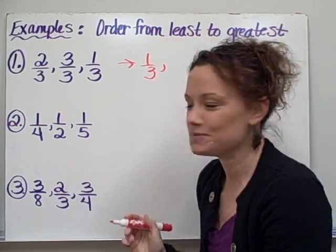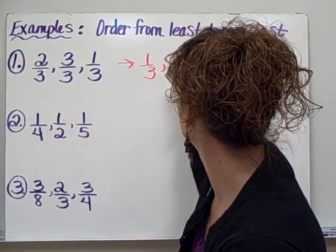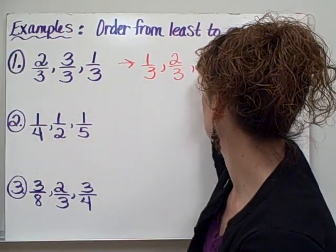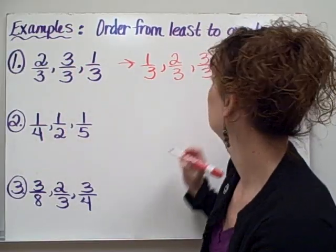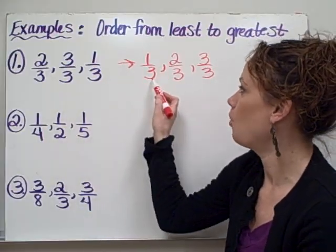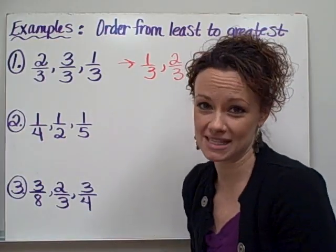Then I would look for the next one. And the 2 would come next, which makes 2/3. And finally, the 3, which makes 3/3 my greatest fraction. So to order these fractions from least to greatest, I would have 1/3, 2/3, and 3/3. Seems pretty simple when the denominator is the same.